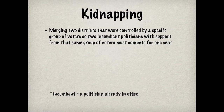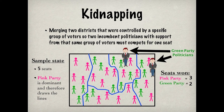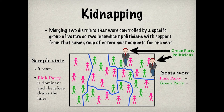Kidnapping involves merging two districts that were controlled by a specific group of voters, so two incumbent politicians with support from that same group of voters must compete for one seat. In this example, the Pink Party merges two districts that were controlled by the Green Party, making two Green Party candidates fight over one district, like this. The result is that the Green Party wins one less seat than it previously had, giving the Pink Party four seats and the Green Party only one.